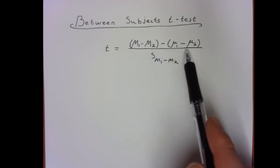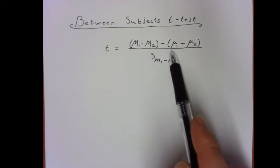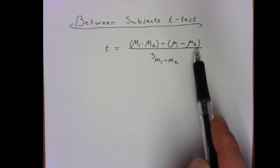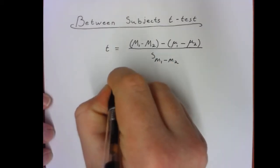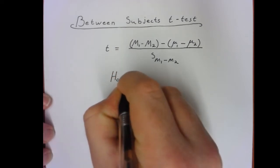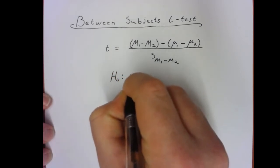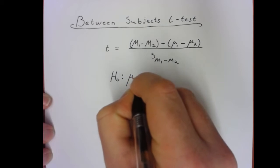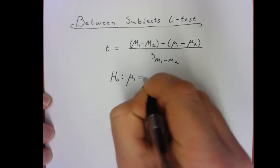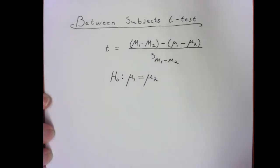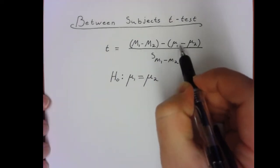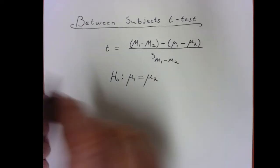Now these values are actually based upon the null hypothesis. So specifically, the null hypothesis for between samples t-test states that μ1 is equal to μ2. So in other words, this mean difference right here is 0.